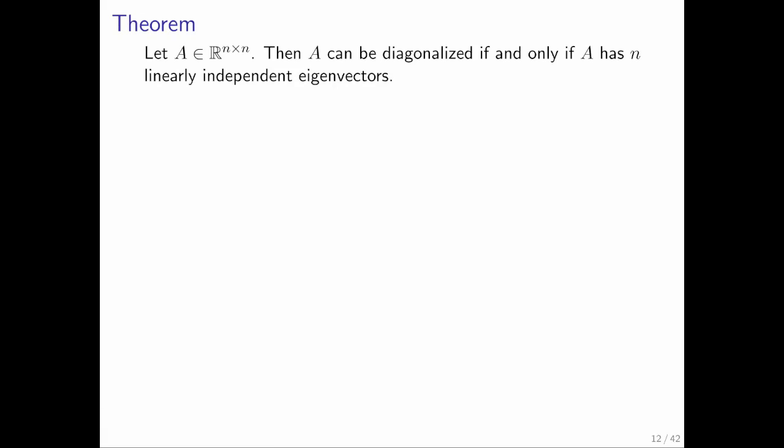Square matrix A, that's n by n, can only be diagonalized if A has n linearly independent eigenvectors.